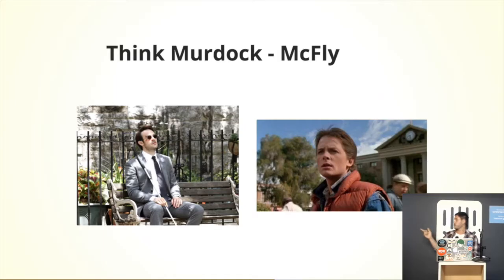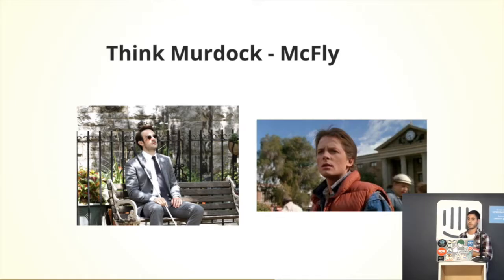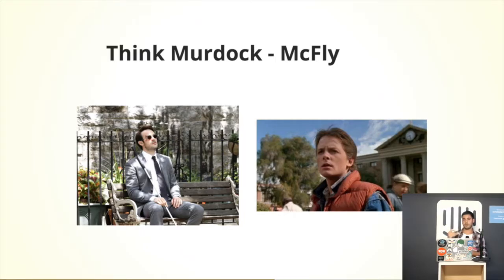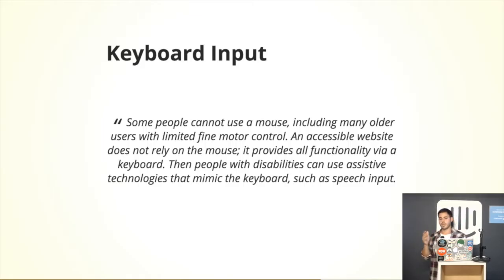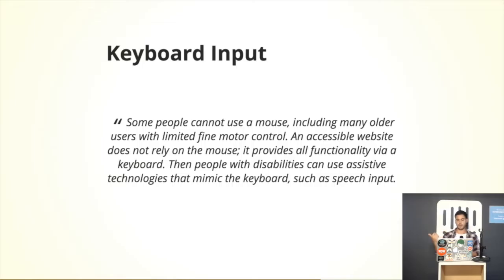Think like Matt Murdock — he's blind, he's Daredevil — he should be able to use your application. And Marty McFly, he's fine, but the actor that plays him has Parkinson's. So he should be able to use your application as well. A mouse requires really precise movement, so you shouldn't expect your users to be able to use a mouse. Everything should be keyboard accessible. That means providing feedback to the user if they're just tabbing through your app, making sure every aspect of your application can be used just through the keyboard.